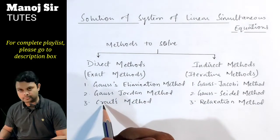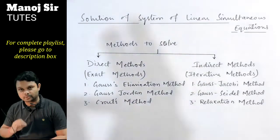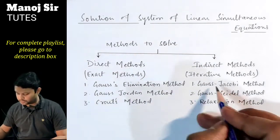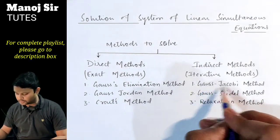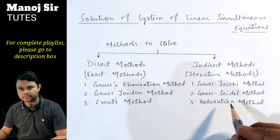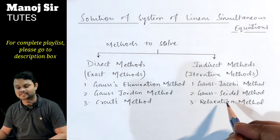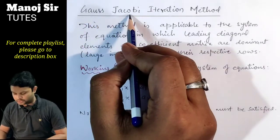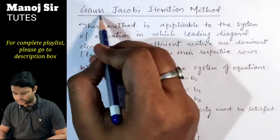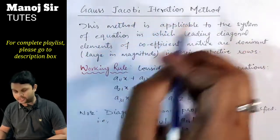In video number three we discussed Cramer's/LU decomposition method in detail with working rule and problems. In this particular video we are going to discuss the Gauss-Jacobi method in detail with working rule and a problem. This is also known as the Gauss-Jacobi iteration method or simply the Jacobi iteration method.